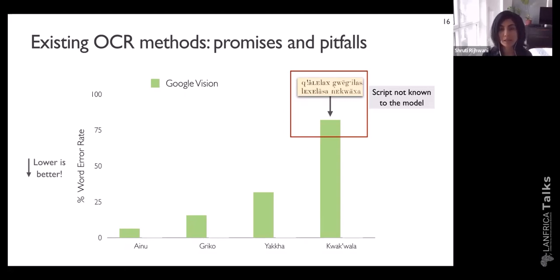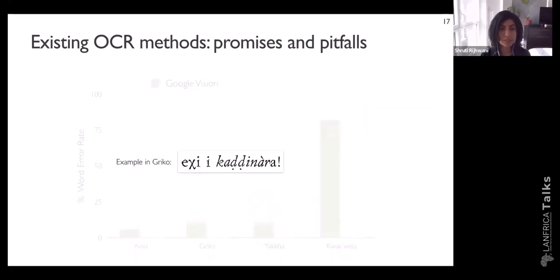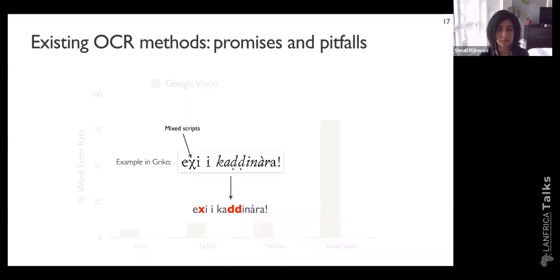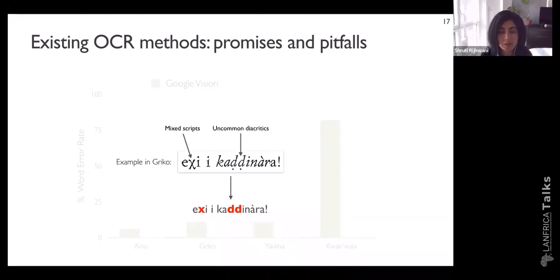Even for languages where the model performs well, our in-depth analysis found some common errors. For example, in the Greco language, one source of error is that the OCR system isn't able to handle mixed scripts within a single line, like where a Greco word uses both the Greek and Latin alphabet. Additionally, for lower-resourced languages that use uncommon diacritics to represent unique sounds, the system hasn't seen these diacritics in the high-resourced languages it was trained on and is unable to always recognize them accurately.